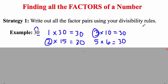We've got 4 pairs of factor pairs: 1 times 30, 2 times 15, 3 times 10, and 5 times 6. If you count all the individual factors, we've got 8 total factors of the number 30.